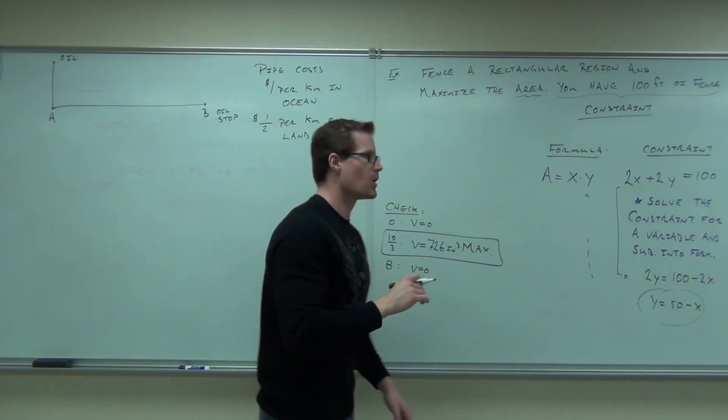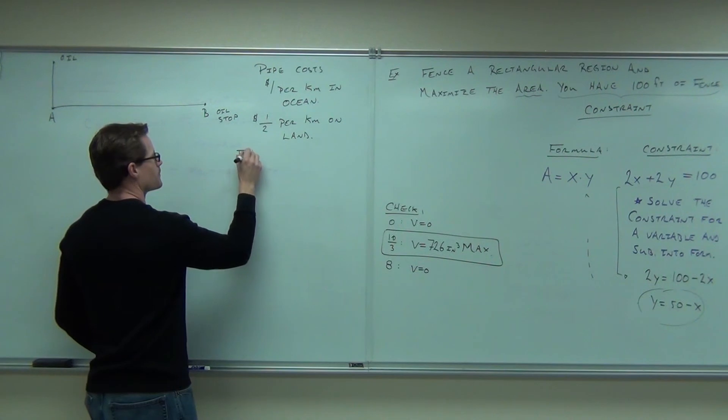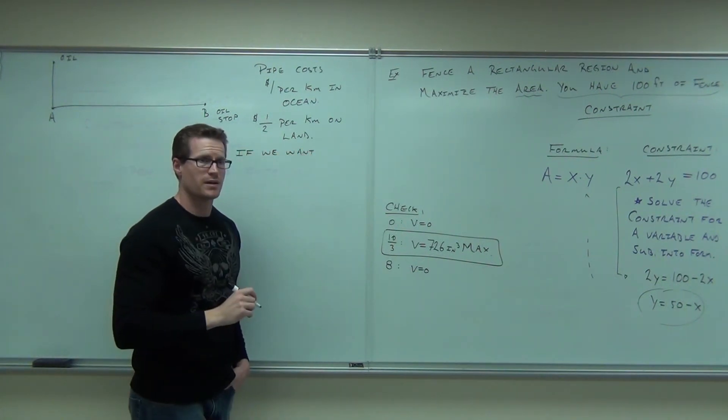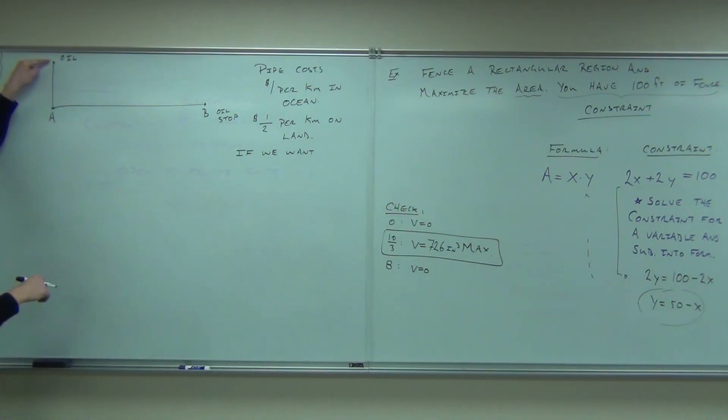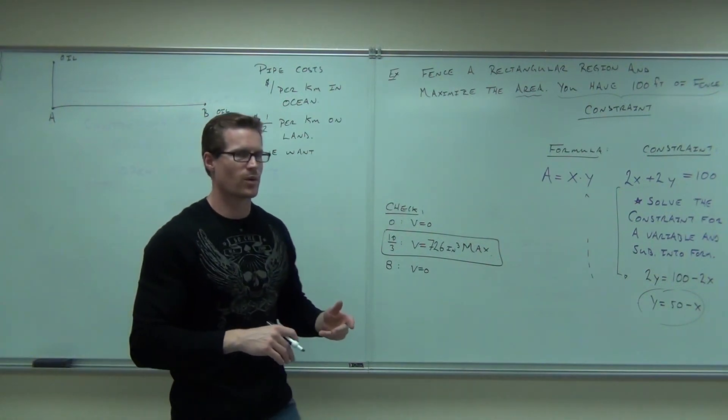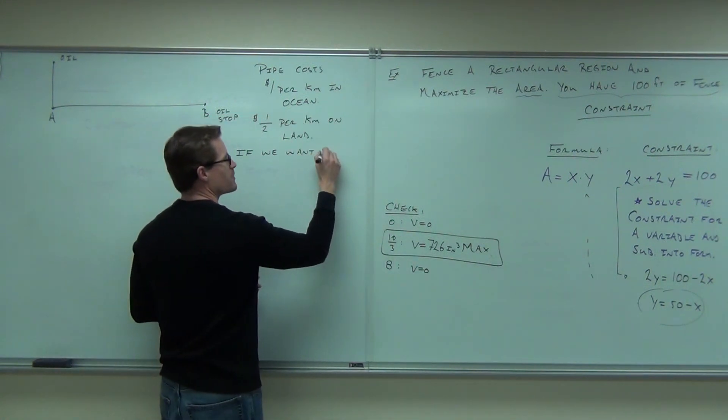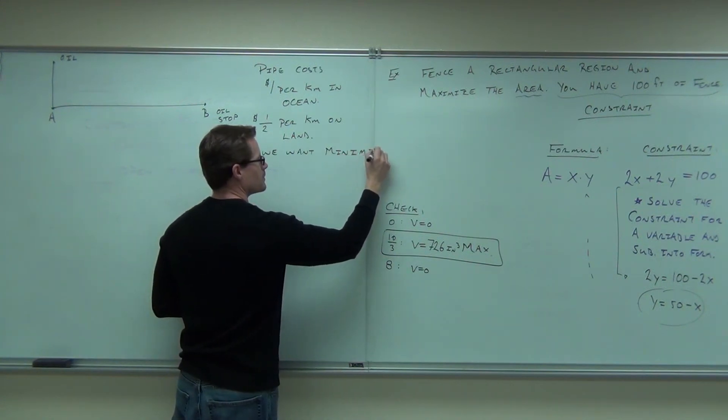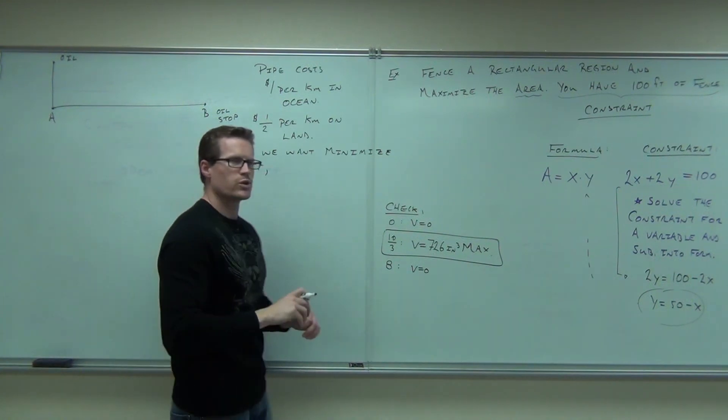If we want to minimize the cost, which I hope that you do, right, you don't want to build the worst pipeline, if you want to build the worst pipeline, you go elsewhere, let's put the oil way over here and then down here and then over here. That'd be stupid, right? We want to come with the most cost-effective way to do this pipeline. So if we want to minimize our cost, what would you do?